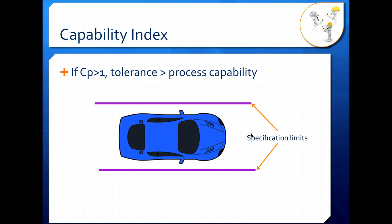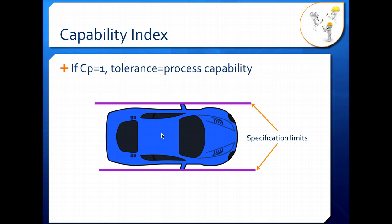CP varies around one. If the capability index is greater than one, our tolerance is greater than our process capability. This means our car is smaller than our parking space, so we can fit within the specification limits even if we park slightly crooked or the car drifts one side or the other. If our capability index is equal to one, our tolerance equals our process capability — our car is just skinny enough to fit in the parking space, and if we shift at all in either direction, we'll be outside specification limits. CP equal to one is okay, but not ideal, as your process has to be very fine-tuned and cannot drift at all.